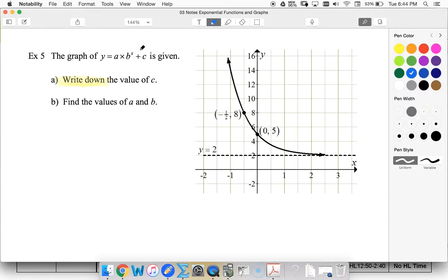So the value of c, we know that c is the vertical shift. Our graph has been moved up two. We know that because the asymptote is now at 2, so that means our value of c must be 2.